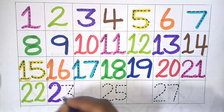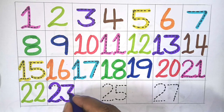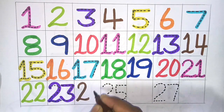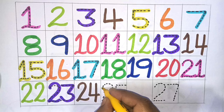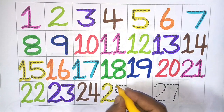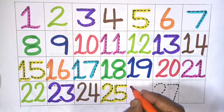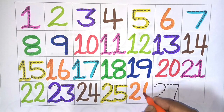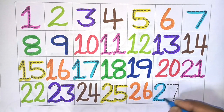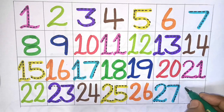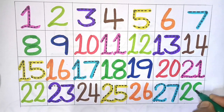next 2, 2, 22, next 2, 3, 23, next 2, 4, 24, next 2, 5, 25, next 2, 6, 26, next 2, 7, 27, next 2, 8, 28.